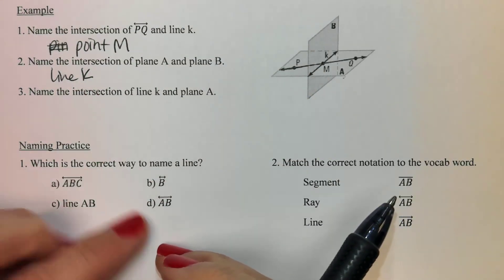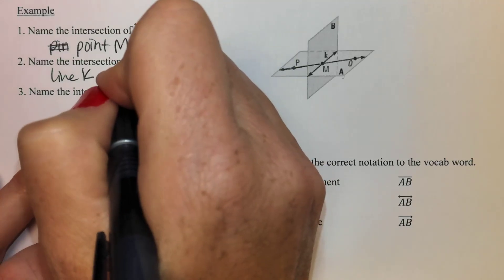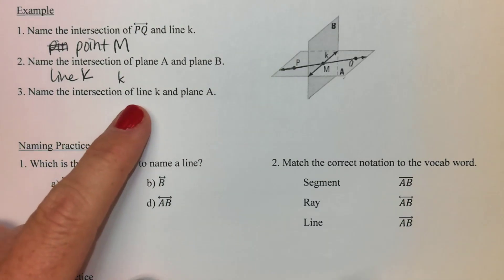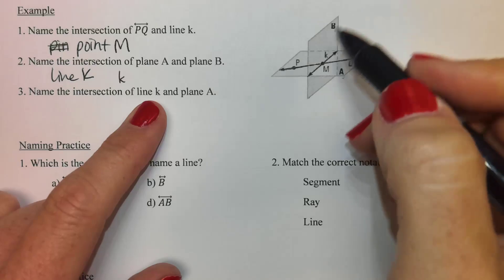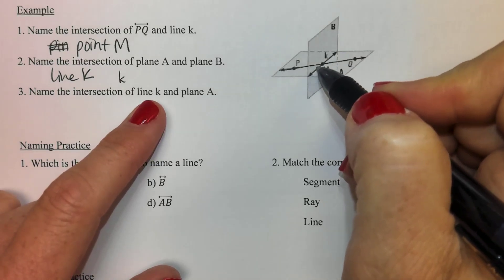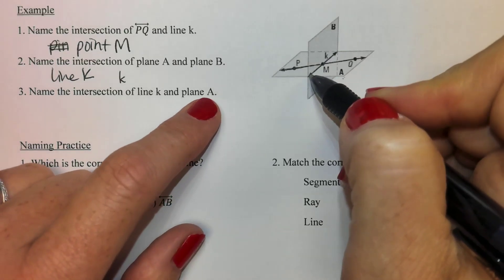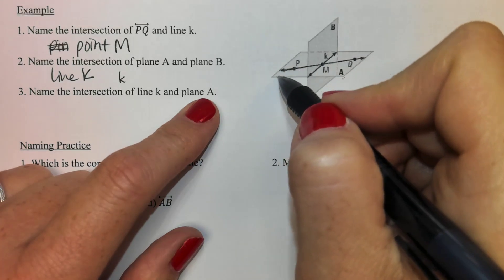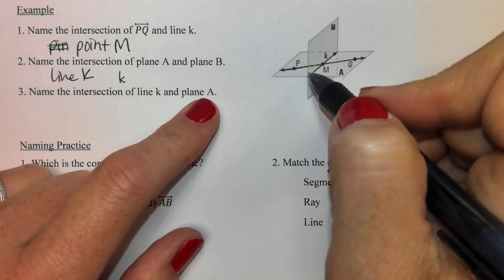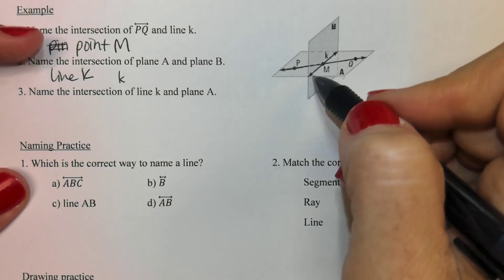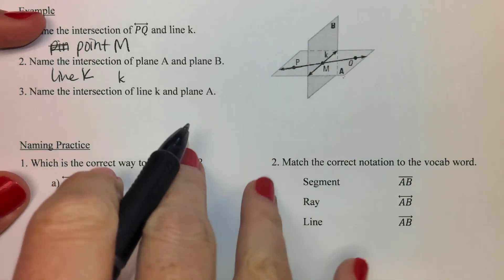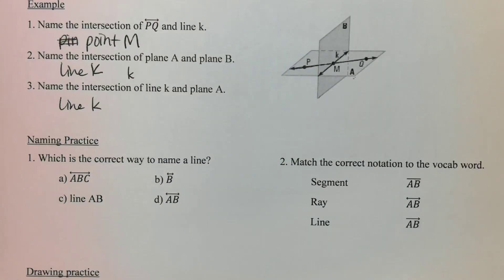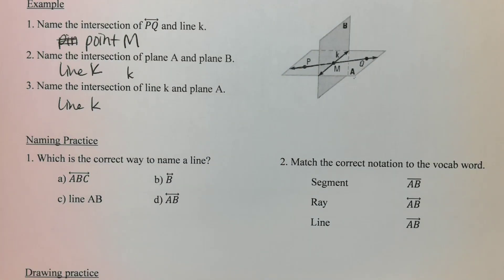That should be a lowercase K. Name the intersection of line K and plane A. That's interesting — the plane is right here and K is already on it, so they don't really intersect separately. K just lays on plane A, so the intersection is just line K. All of line K — they touch.